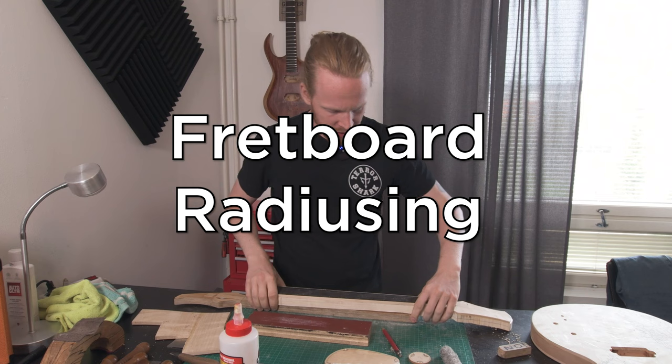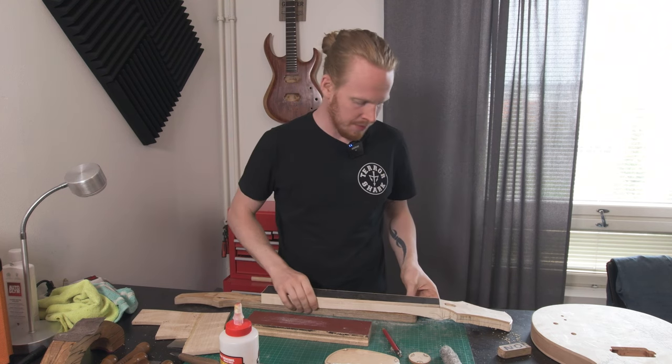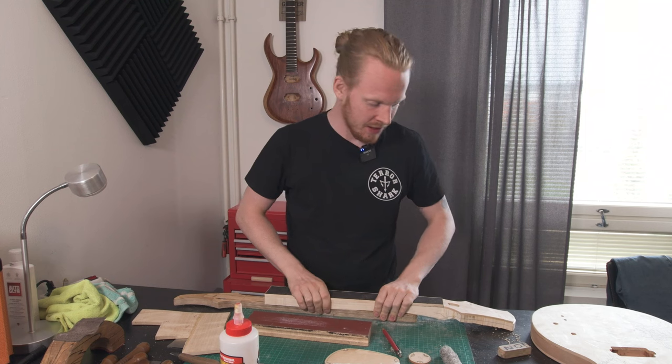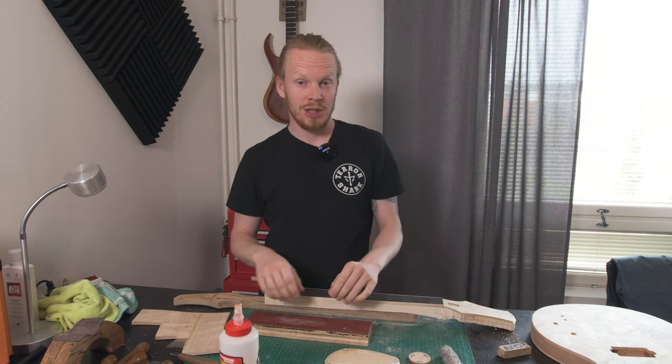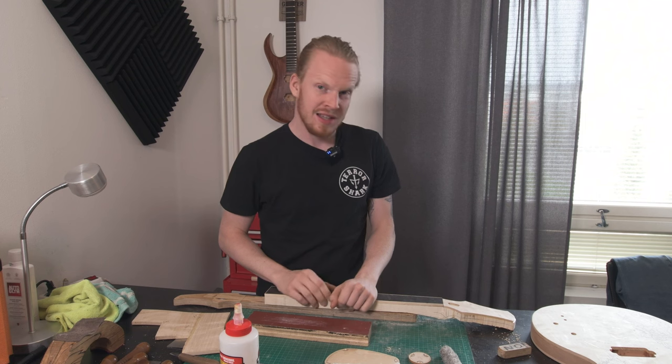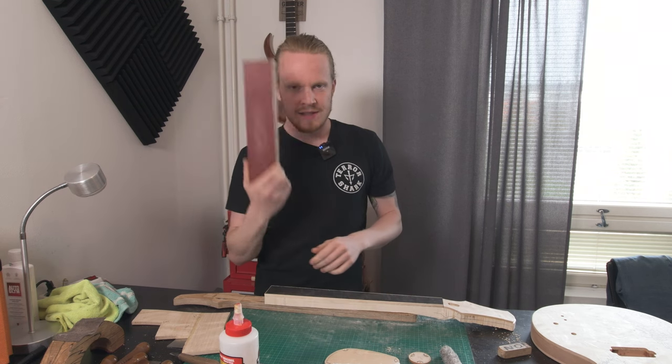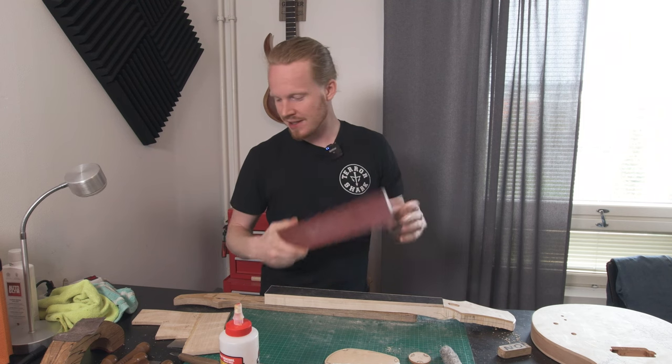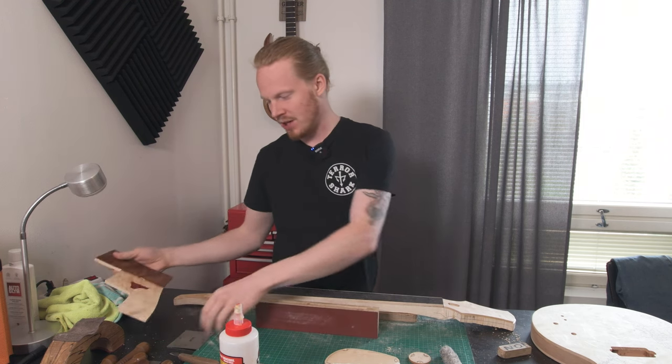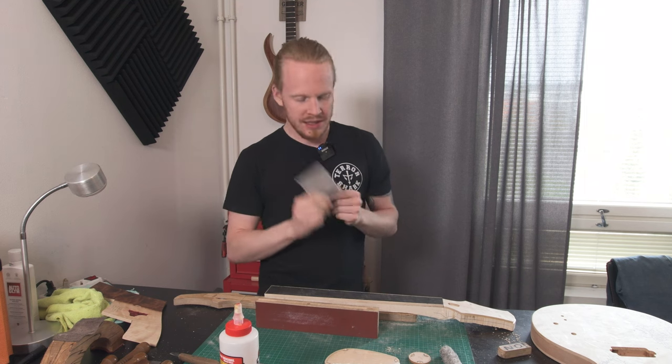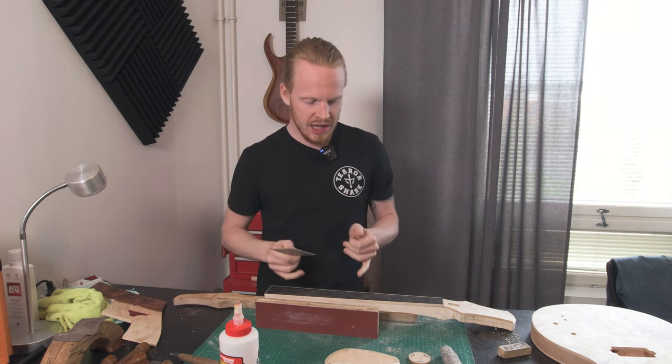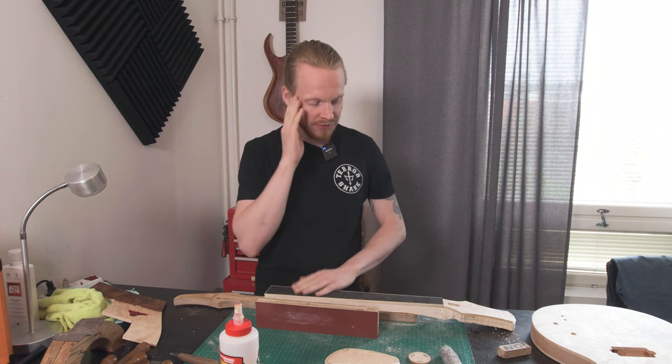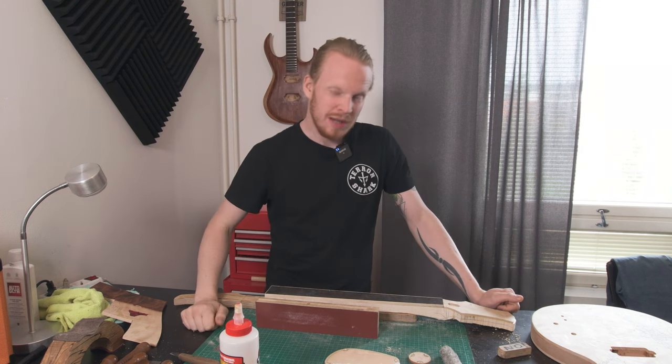Next up we're gonna start working on the fretboard. Need to first of all sand the radius. Now that's gonna be long, boring, and dusty, and I'm gonna look like a coal miner within seconds. What we're gonna be using is a radius block. This is a 16 inch radius, which is my preferred radius.